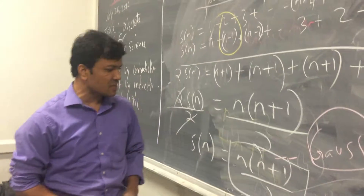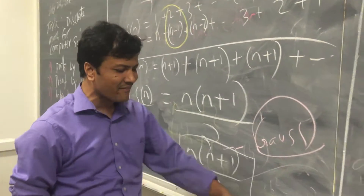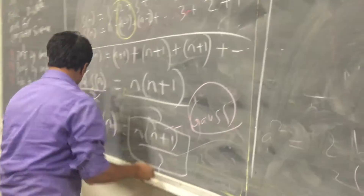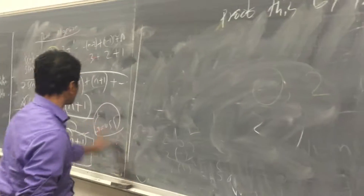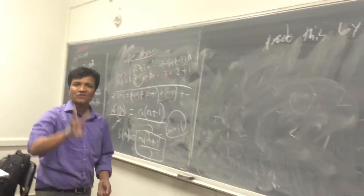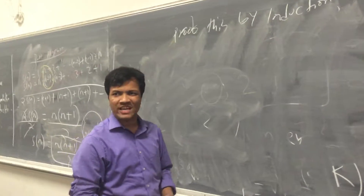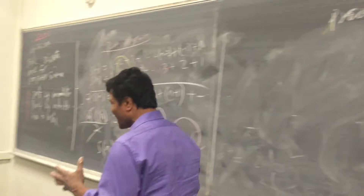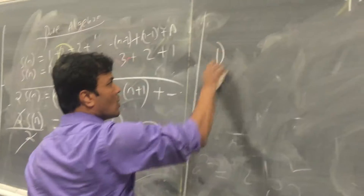Gauss came out with this equation at six or seven years old. So let's do proof by induction. Proof by induction uses three axioms. We talked about axioms yesterday — an axiom is something we cannot prove; it is just an assumption. Three axioms.